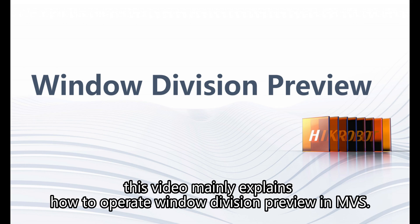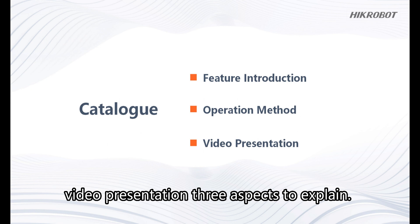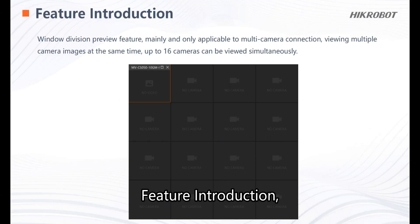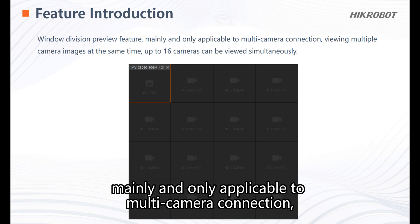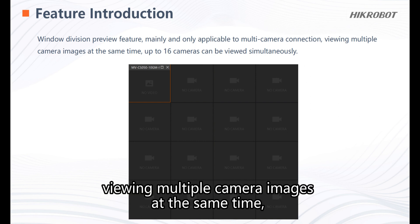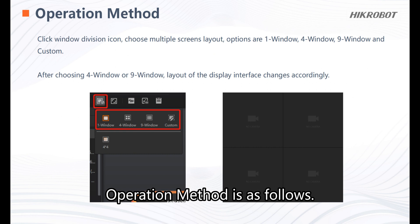This video explains how to operate window division preview in MVS, covering three aspects: feature introduction, operation method, and video presentation. The window division preview feature is mainly and only applicable to multi-camera connection viewing, allowing multiple camera images to be viewed at the same time — up to 16 cameras simultaneously.